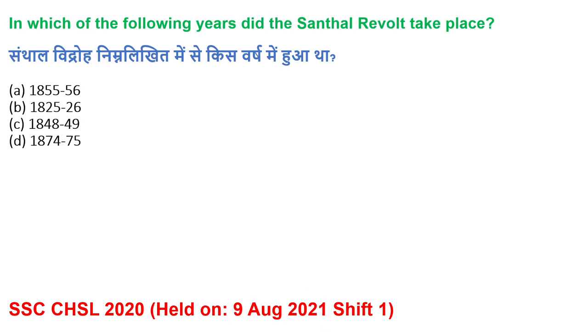What was the year for the next question? The answer is 1855 to 1856. Option number 8 is the right answer for this question — SSC CGL 2020.